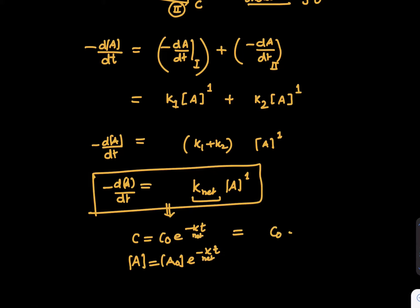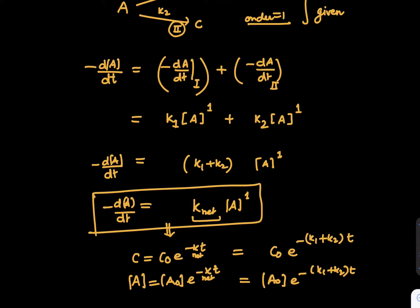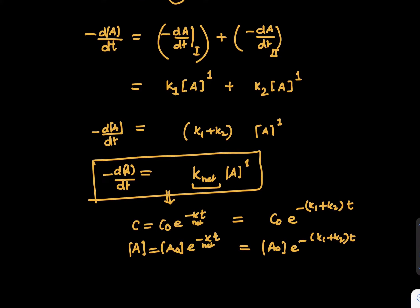So we can say k_net, we can use in place of k. And how much is k_net? k_net is k1 plus k2 times t. So this is A0 e power minus k1 plus k2 times t. So we can write this kind of result. And we can solve for any requirement of time or rate constants or A0 as per the question.